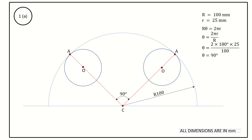Point A was touching the arc earlier; after one complete revolution, point A touches the arc on the other side. Now we must locate more points to draw a smooth hypocycloid. We can go for 8 or 12 points — to get a smooth curve, it is better to go for 12 points. Therefore, divide the generating circle into 12 equal parts and divide the angle of 90 degrees into 12 equal parts.